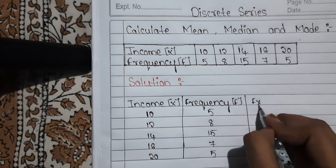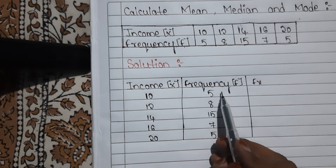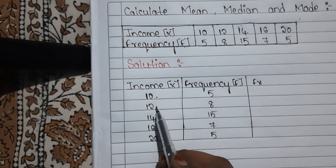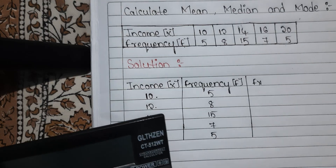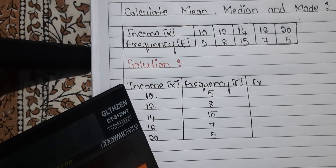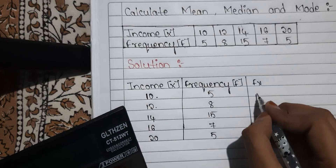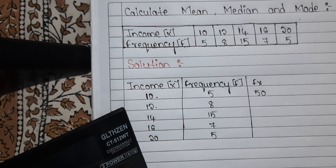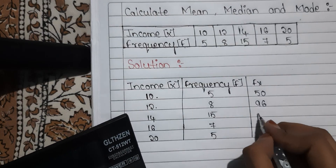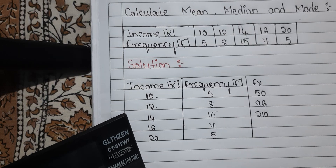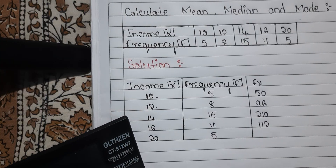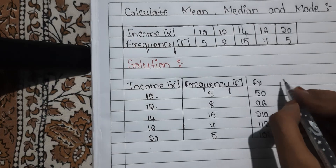Next we calculate Fx. Fx is nothing but when you multiply the X value with the F value, you get Fx. Use a calculator so there are no mistakes. 10 into 5 is 50. 12 into 8 is 96. 14 into 15 is 210. 16 into 7 is 112. 20 into 5 is 100. So these are our Fx values.